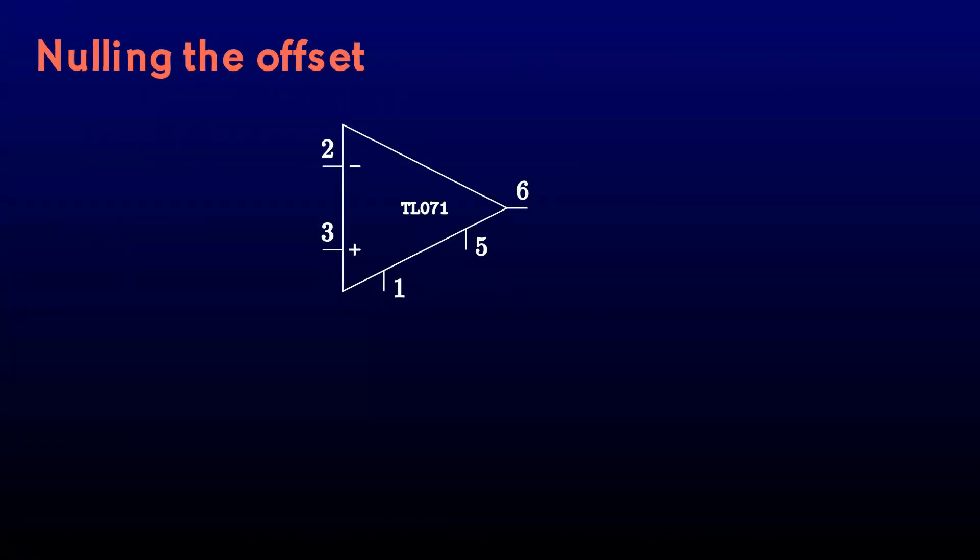Fortunately, for this particular op-amp, the manufacturer has given us a way to adjust the offset. I've cribbed this addition directly from the datasheet. There are two pins on the chip that you can tie to an external trim pot and resistor to null out the offset. This isn't 100% ideal, because the offset is still temperature dependent. Still, it's a lot better than nothing. Let's add that stuff to the breadboard.